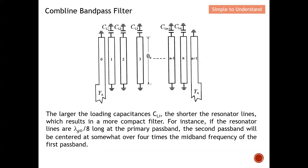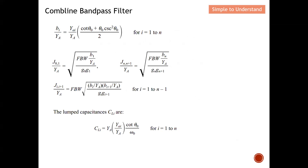The larger the loading capacitor, the shorter the resonator — the bigger the capacitance C, the shorter the length of the resonator. This is desirable because our filter will become smaller. For instance, if the resonator lines are all lambda/8 long at the primary passband, the second passband will be centered at around four times the mid-band frequency of the first passband.